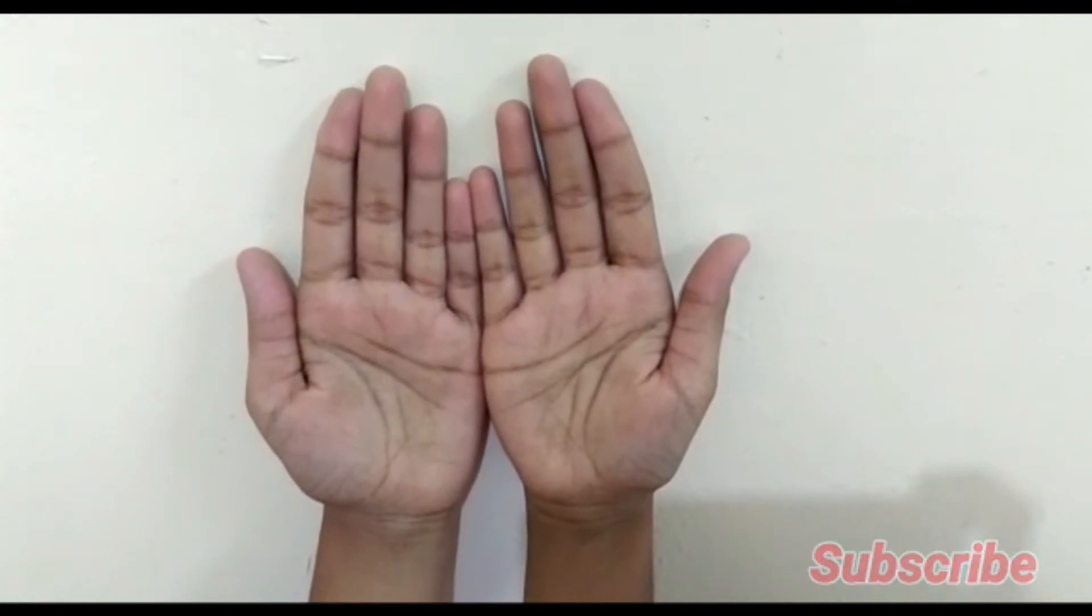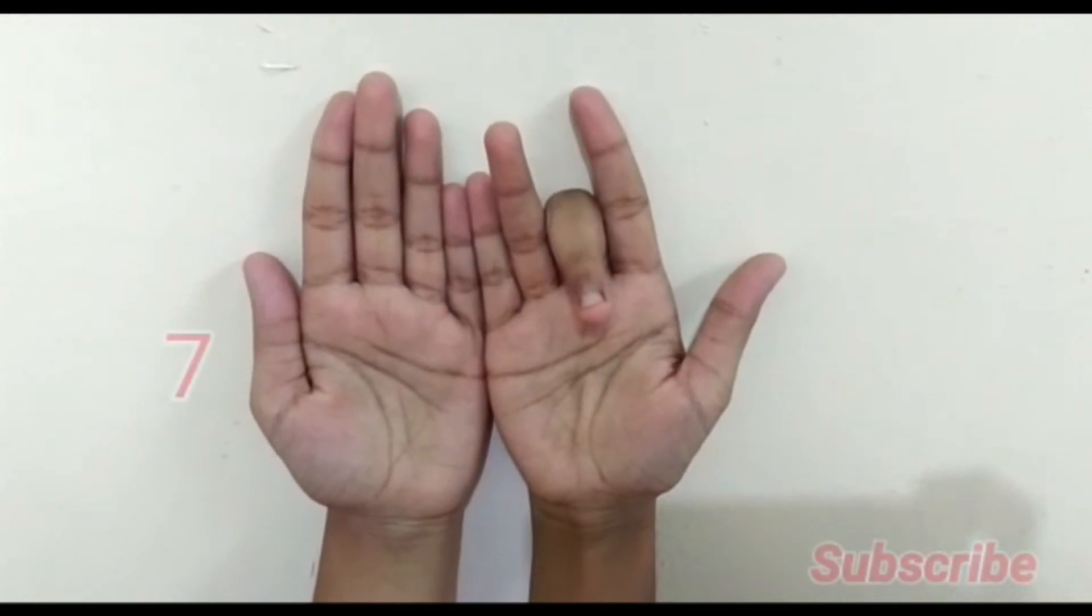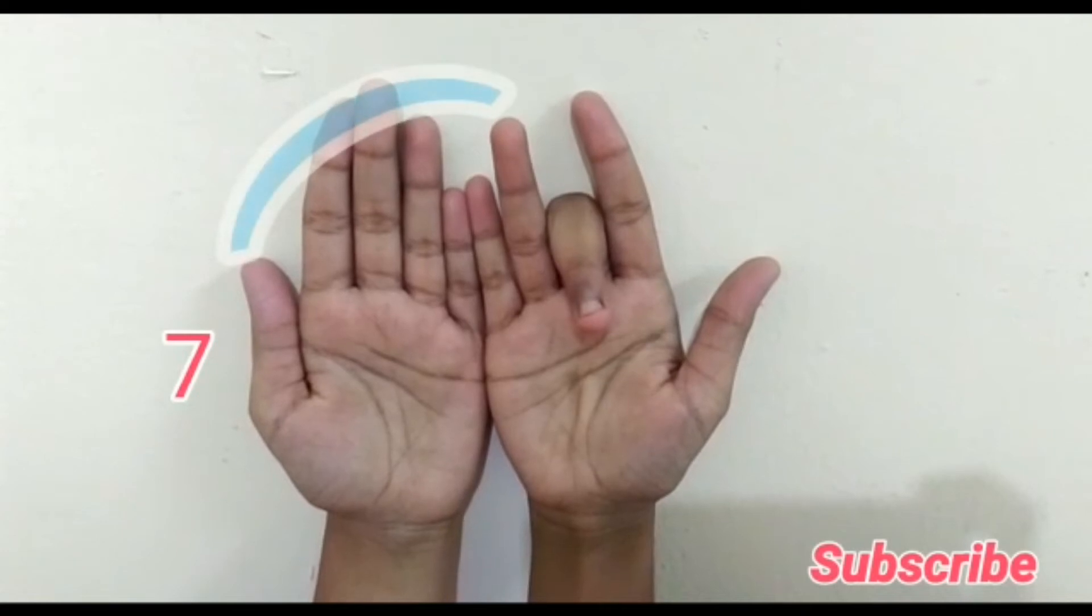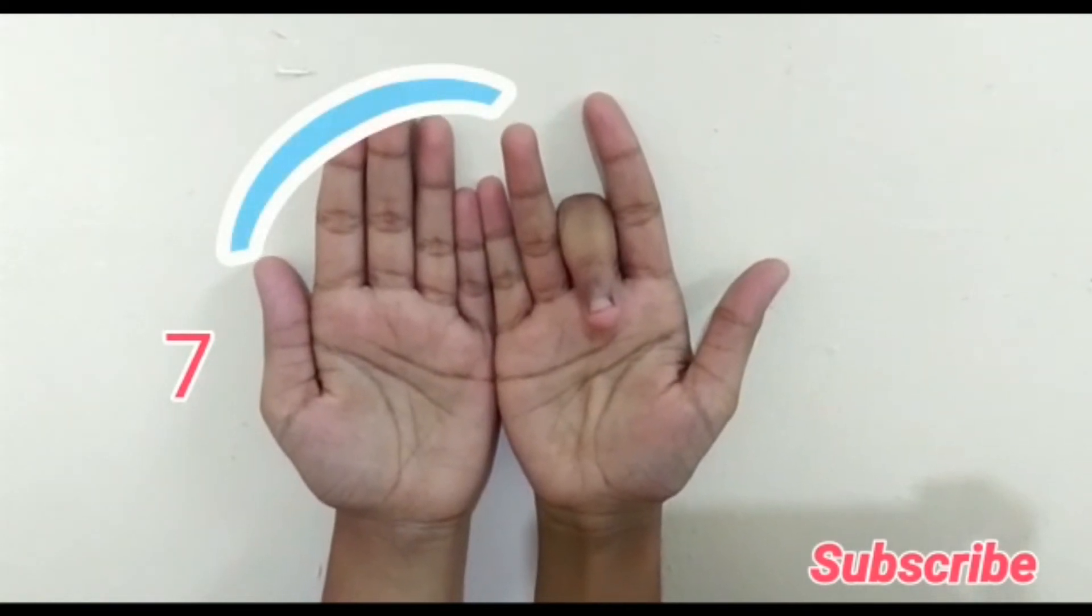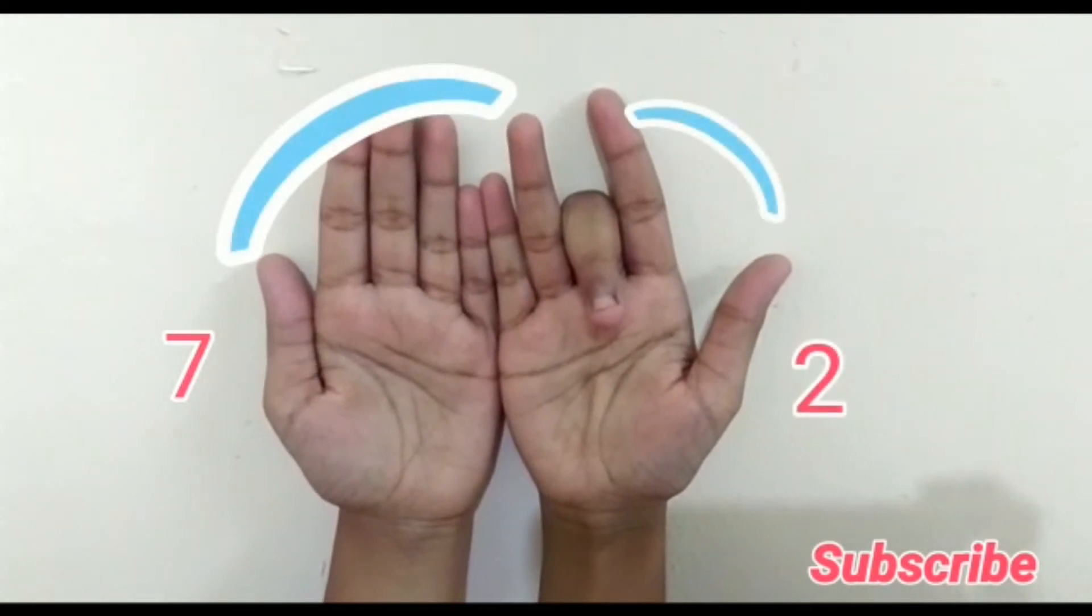8 into 9. So fold your eighth finger. Towards the left side of it it's 7 and towards the right side it's 2. So 8 times 9 are 72.